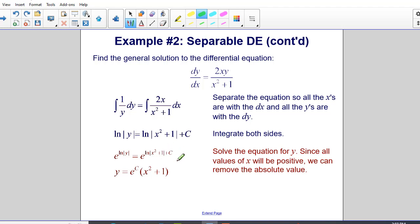Remember adding exponents occurs when you multiply terms with like bases. Now e is a constant term, so is e to the c, so I replace e to the c with just c as it represents some constant value. Therefore my final general solution is y is equal to c times x squared plus one.